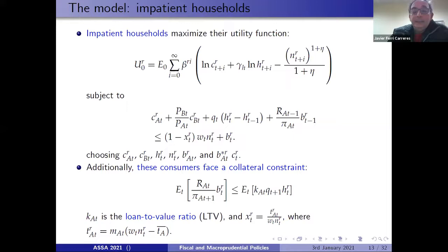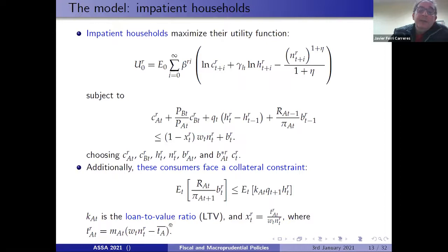In the budget constraint, there is an average tax rate paid by borrowers and an average tax rate paid by lenders. This average tax rate is obtained by dividing total tax paid by borrowers over labor income. Total taxes depend on a flat rate and an exempt labor income, so the tax scheme in this economy is progressive. This flat rate is controlled by the fiscal authority.